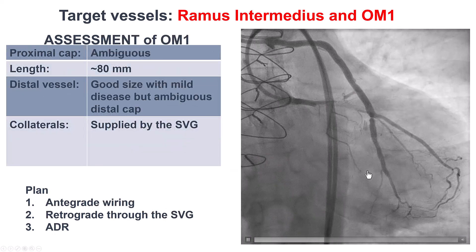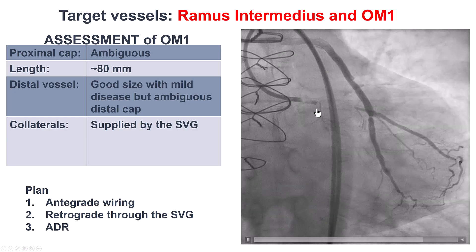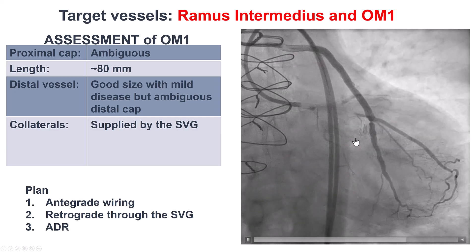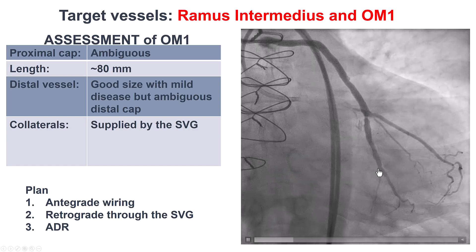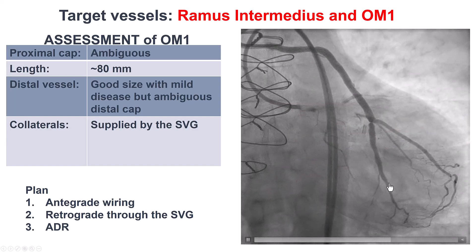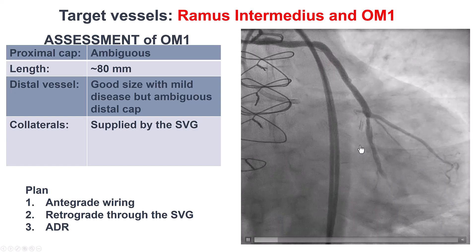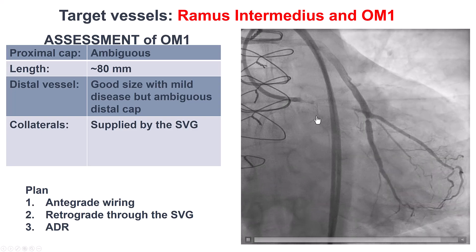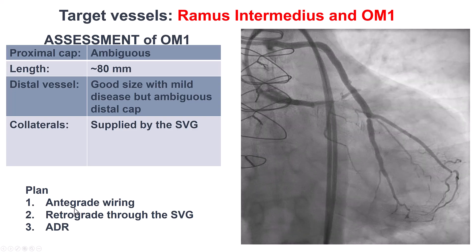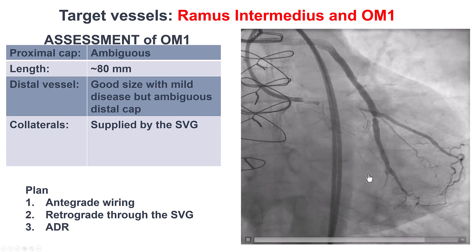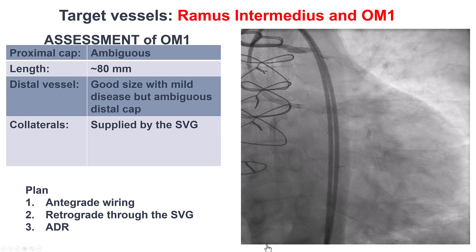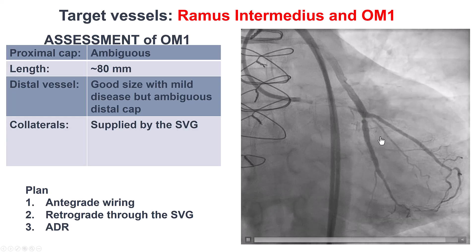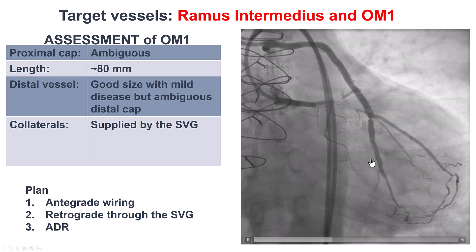Regarding the OM CTO, which was more challenging — this was a much longer CTO, once again with an ambiguous proximal cap, but there are some stents in the proximal circumflex and the OM1. The distal vessel is good quality, filling through the SVG. However, there may be some retrograde filling, and that portion of the vessel seems diffusely diseased. Our plan was to start with antegrade wiring attempts, and if that didn't work, try retrograde — but the angulation was extreme, making it very hard to advance a guidewire and microcatheter retrograde into the obtuse marginal branch.